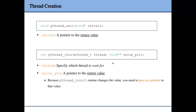If you want one thread to wait for another thread to exit and collect its return value, you can use the join function. The join function takes two arguments: the first is the thread ID to specify which thread to wait for, and the second is a pointer to a void pointer where the join function will store the void pointer return value from the exiting thread.